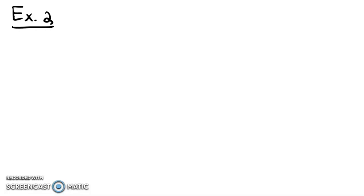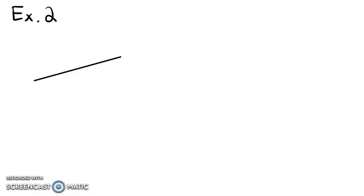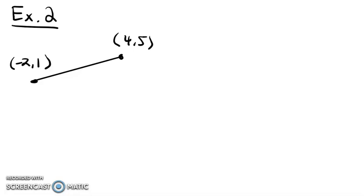So let's go through another example now. Example 2 — we have another line segment. One end of our line segment has coordinates (4, 5). The other end of our line segment has coordinates (-2, 1). And we want to find out what the midpoint of this line is.